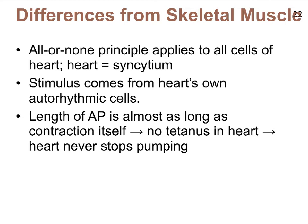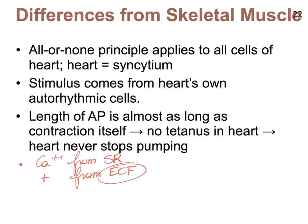One more important difference is the source of calcium. In skeletal muscle, calcium is only provided by the terminal cisternae, which are part of the sarcoplasmic reticulum. In heart muscle, calcium is provided by the sarcoplasmic reticulum but also by the extracellular fluid, and this additional source provides enough calcium to bind troponin complexes during the plateau of the action potential.